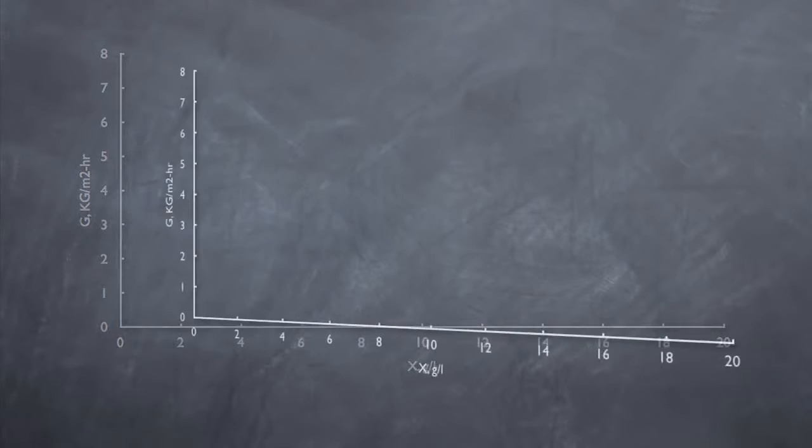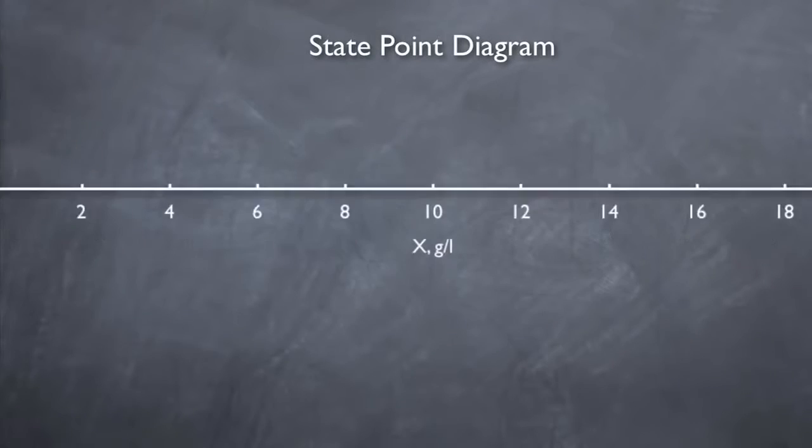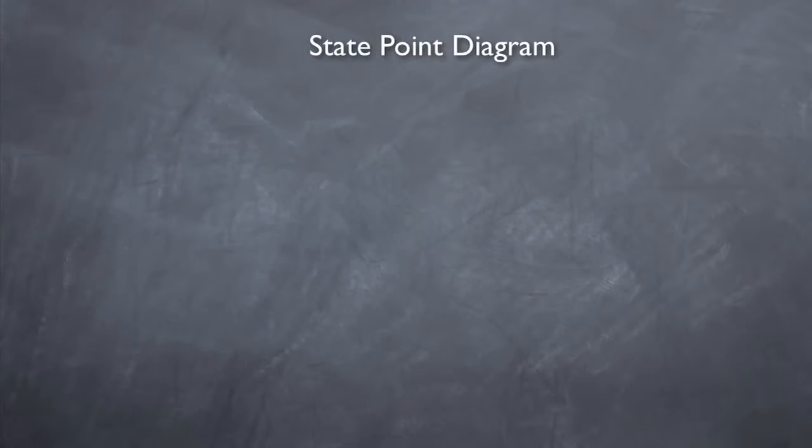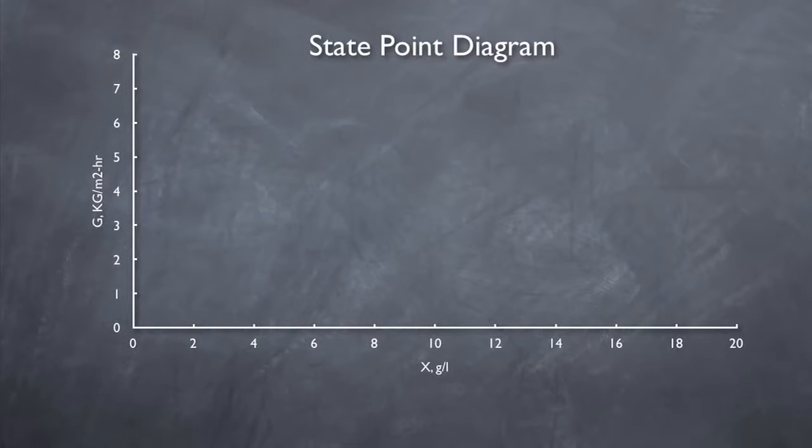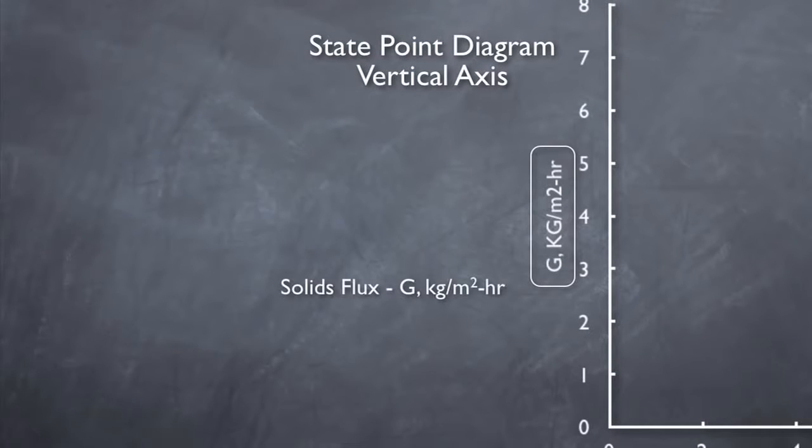Let's go through what the state point diagram is and what it represents. The state point diagram consists of a horizontal axis, which represents the solids concentration, x, measured in grams per liter. The vertical axis represents the solids flux, g, measured in kilograms per meter squared hour.